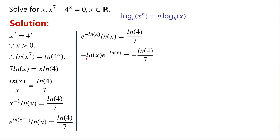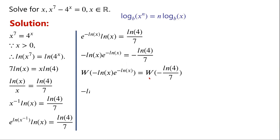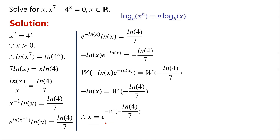We can now write minus ln x times e to the power of minus ln x equals minus ln 4 over 7. Now we take the Lambert W function on both sides of the equation. W of minus ln x times e to the power of minus ln x equals minus ln x. So, x equals e to the power of minus W of minus ln 4 over 7. This is the solution.